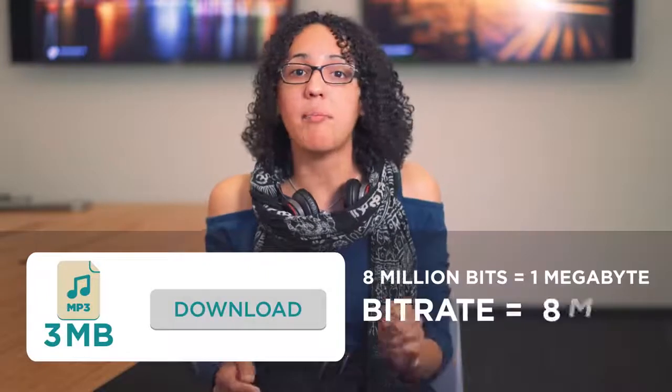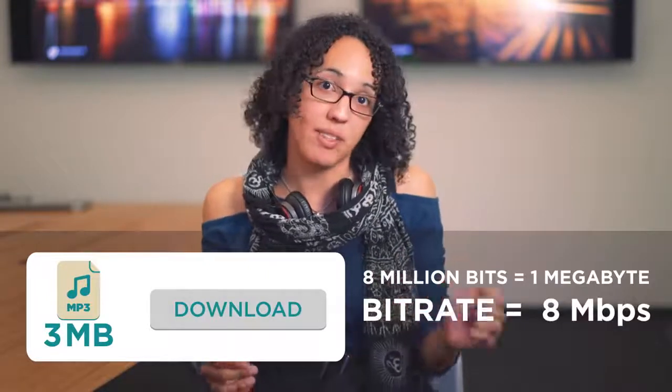In our human analogy, one bit per second was pretty fast, but kind of hard for a human to keep up with. So let's say that you want to actually download a three megabyte song in like three seconds. At eight million bits per megabyte, that means a bit rate of about eight million bits per second.